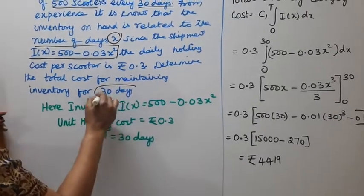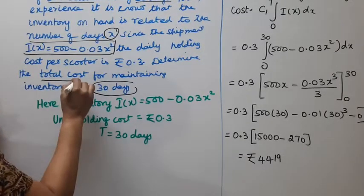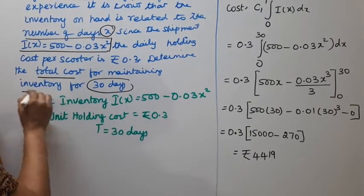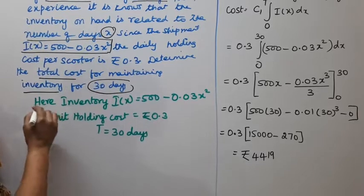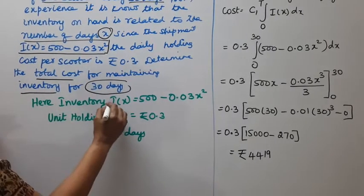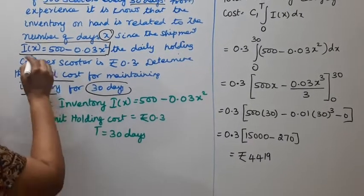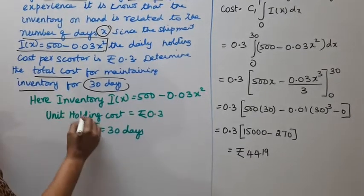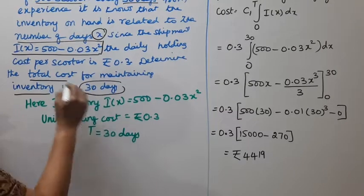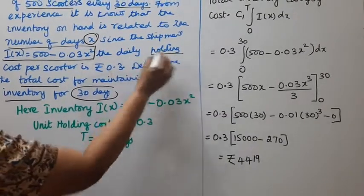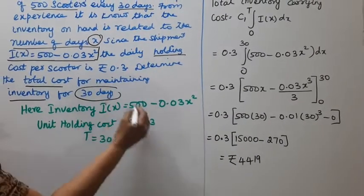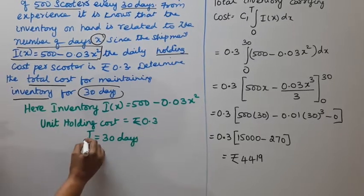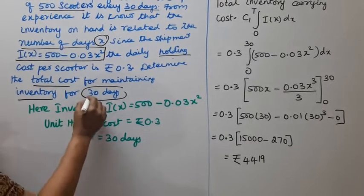We need to determine the total cost for maintaining inventory for 30 days. Here, inventory I(x) = 500 - 0.03x². Unit holding cost is ₹0.3, and T = 30 days.